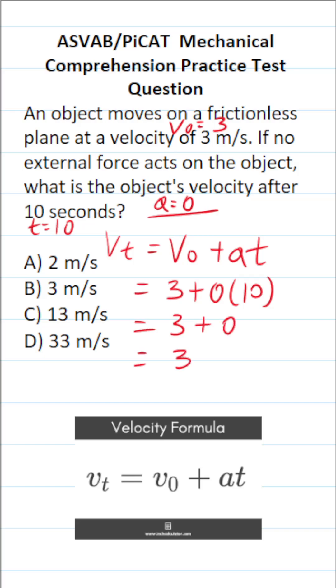So the object is just going to continue moving along at a velocity of 3 meters a second. So this one is B, of course.